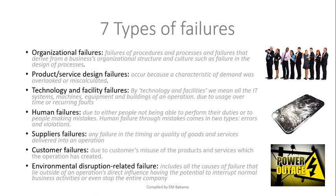Human failure is most often a failure that happens because people are not able to perform their duties or are making mistakes. We have errors — a failure that happened because there was something you were supposed to do but forgot or didn't know — and violations, which are failures where you purposely skip required steps based on experience, going from A to C instead of A to B to C, which leads to human failure.